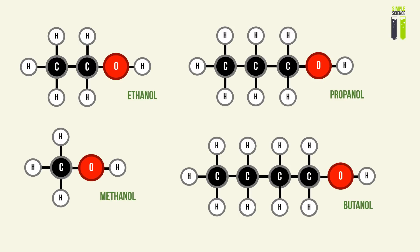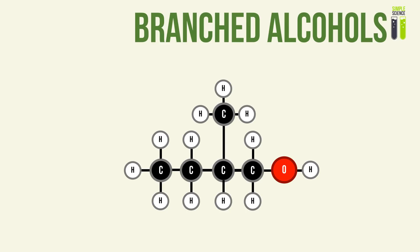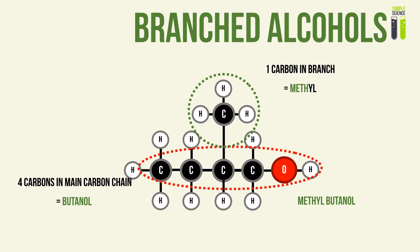Here are other examples of alcohol molecules, whereby their names depend on the number of carbons in their carbon chain. Like any other organic molecule, there can be branched molecules. This is a branched alcohol with a methyl branch — one carbon in its branch. The main carbon chain has four carbons, giving the suffix name butanol, and the branch gives the prefix methyl. So this whole branched alcohol is named methylbutanol.